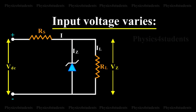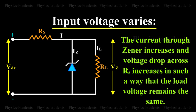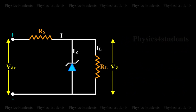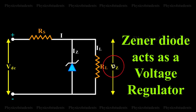Input voltage varies. Let us consider that the input voltage VDC increases. Now, the current through the Zener increases, and voltage drop across RS increases in such a way that the load voltage remains the same. Thus, the Zener diode acts as a voltage regulator.